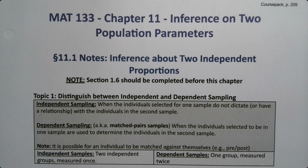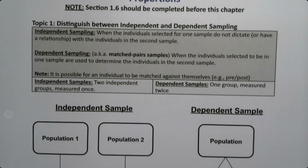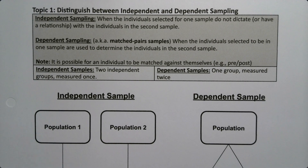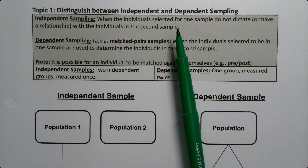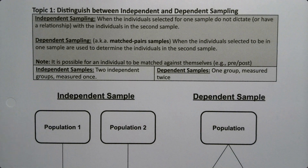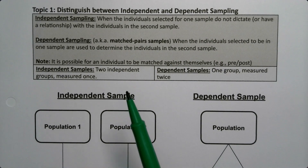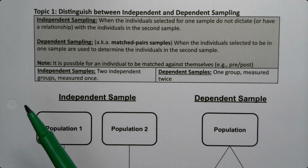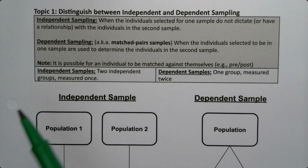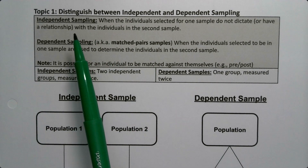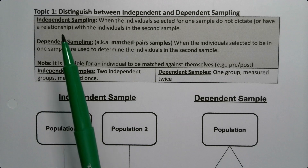Now before we get into that, we need to talk about the types of sampling we're going to see. Because understanding the types of sampling will help you determine which section you're in and what type of confidence interval or hypothesis test question you need to answer. There are two main types of sampling: independent sampling and dependent sampling.